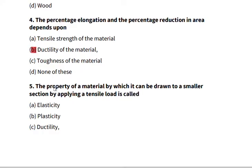Number five: the property of a material by which it can be drawn to a smaller section by applying a tensile load is called. For a material to be drawn to smaller section or beaten into a smaller section by applying load is called, and that is ductility. That means the material is very ductile.